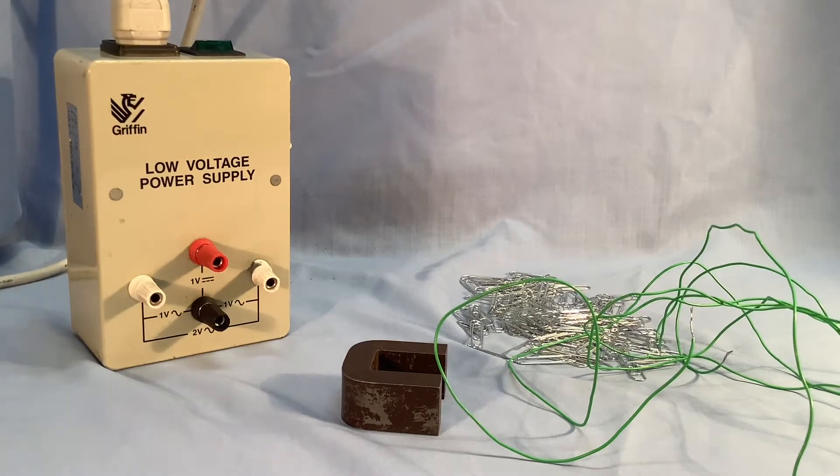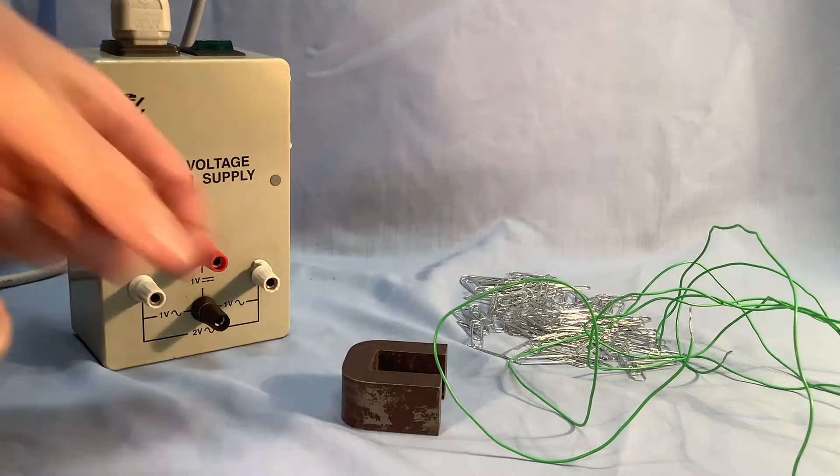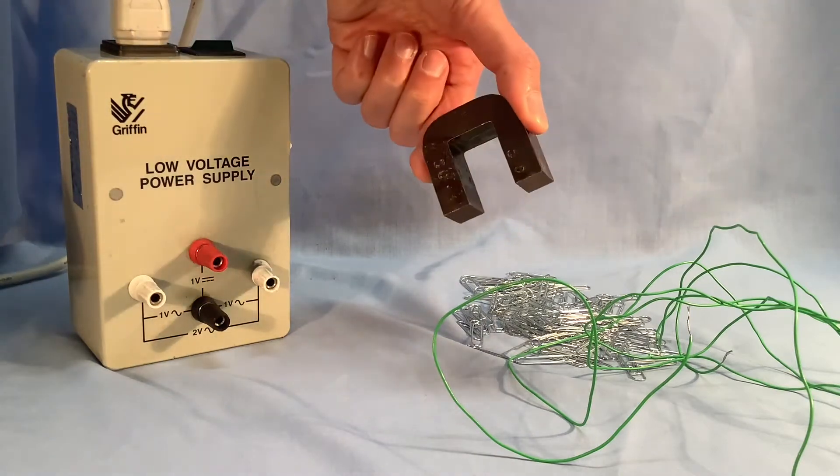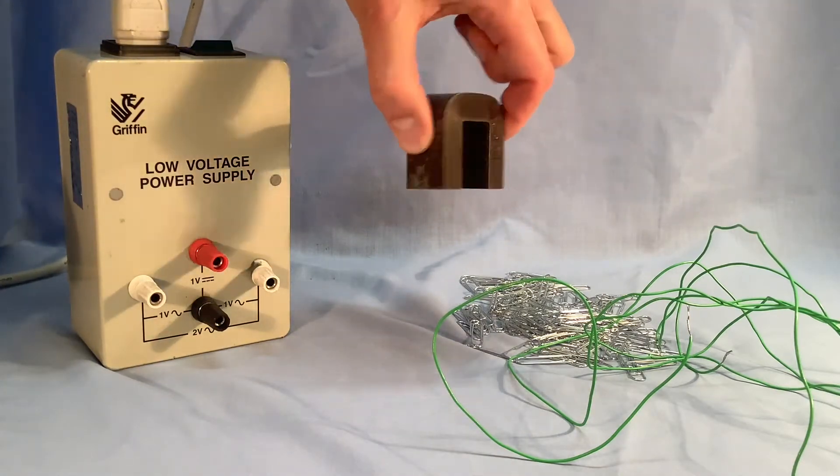If you want to do an investigation looking at the number of turns and how that affects the strength of an electromagnet, then I find that using C-cores, which come in transformer kits, are very useful as they make very good electromagnets.